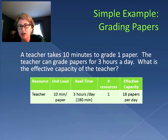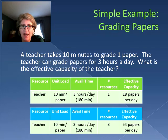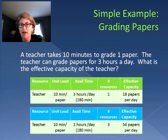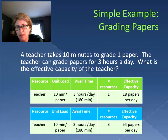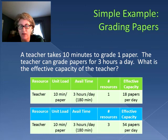Now let's see what happens if we change the number of resources. We still have the resource pool of teachers, and the unit load hasn't changed either. The individual available time per teacher also hasn't changed. But now we have three resources. So our effective capacity has actually tripled. We now have three resources instead of one. So instead of 18 papers per day, we now have 54 papers per day. We take how much time we have available for all the resources in the pool and divide it by the unit load, and that gives us our effective capacity.